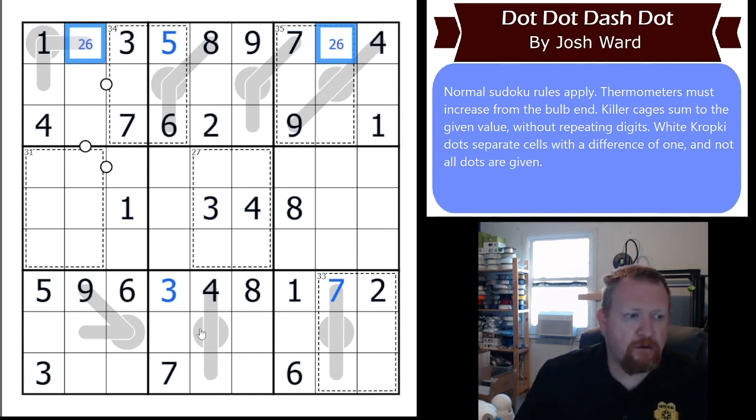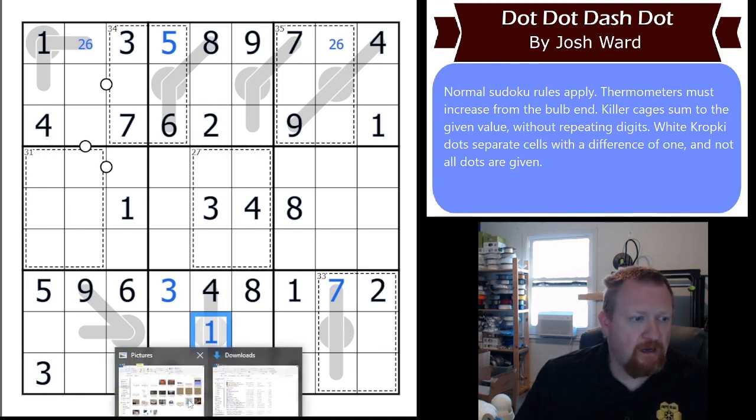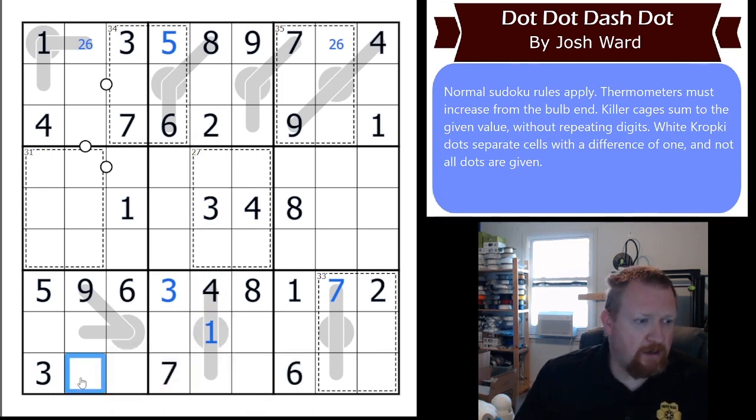The thermometer here needs a number that's less than 4. It can see a 2 and 3, so that means that's a 1, which also places a 1 here. The 35 cage here can't have a 4 and 1 in it, which means that its digits have to be 2, 3, 6, 7, 8, and 9. The 7 and 9 are already placed.